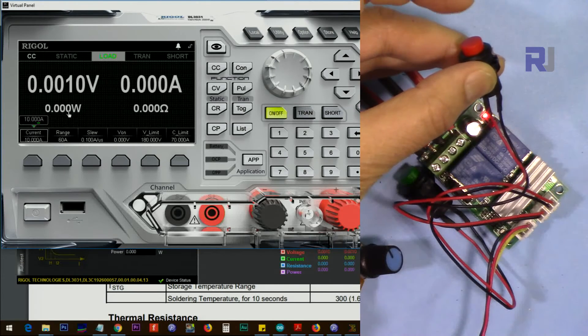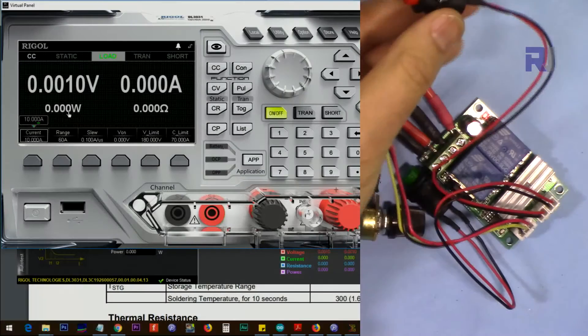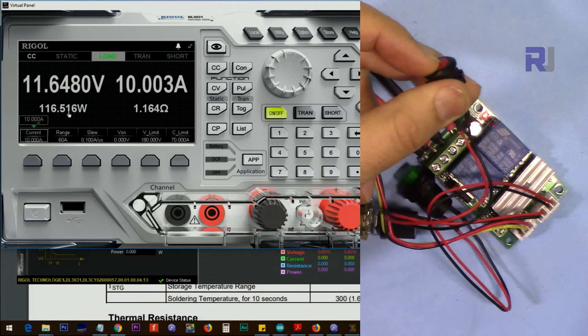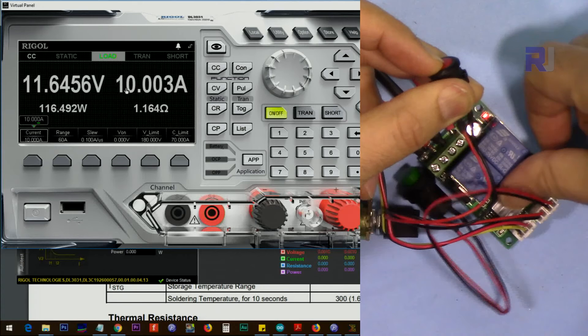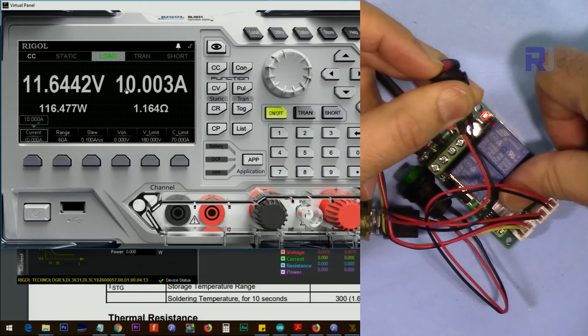Let me turn off this one. Let me make it 12 volts. Now the output voltage, the voltage here input is 12 volts and current is 10 ampere. It's barely getting warm.